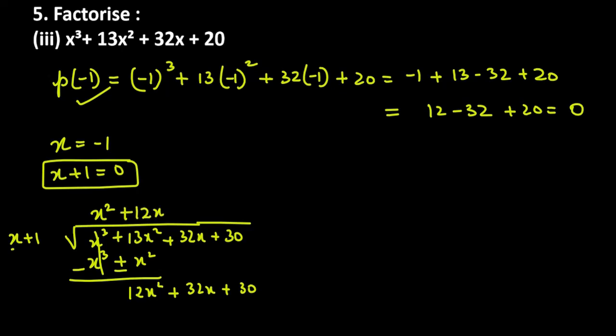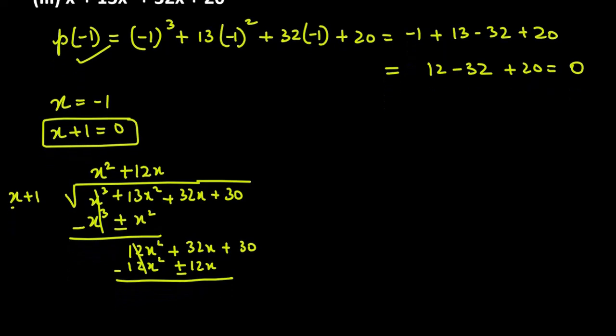Bring down 32x. To make x into 12x square, multiply by 12x. So 12x square appears. 12x times 1 gives 12x. After sign change: 12x square cancels. Then 32x minus 12x gives 20x. Bring down the last value, which is 20.